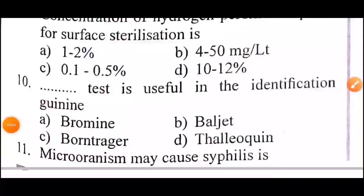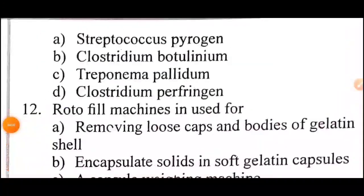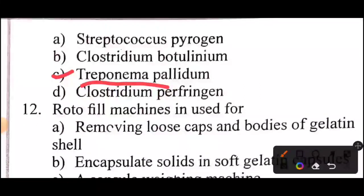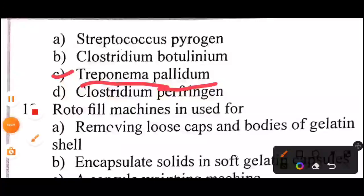Eleventh question: Which microorganism may cause syphilis? Answer: Option C — Treponema pallidum.